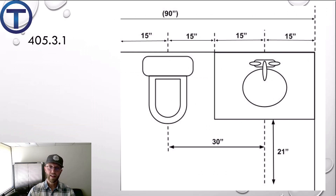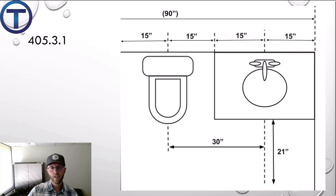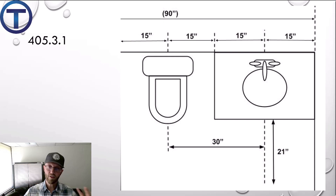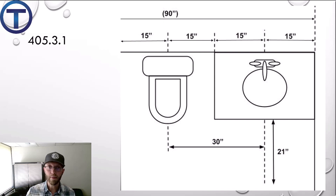You should definitely memorize: 15 inches away from a finished wall to the center of the fixture, 30 inches center to center between fixtures, and 21 inches out in front. This gives you the ability to figure out restrooms. Even on a plan that may not have everything spelled out, you know your minimums and can lay out a restroom.